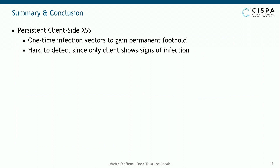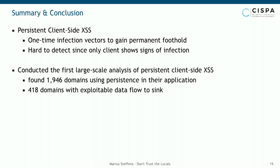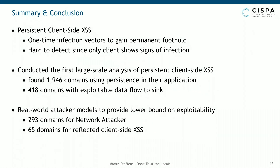To wrap up: we've shown the threat of persistent client-side cross-site scripting, which has been rather overlooked in the past. It's a little nasty since a one-time infection gains the attacker a permanent foothold in the victim's browser, and it's relatively hard to detect — leaving in most instances no traces on the server side. We conducted the first large-scale study, finding that out of 5,000 investigated applications, 2,000 make use of persistent data, with 418 doing so incorrectly. We found 290 domains susceptible to a network attacker, and for 65 domains, end-to-end exploitation was possible via both a reflective and a persistent client-side XSS.